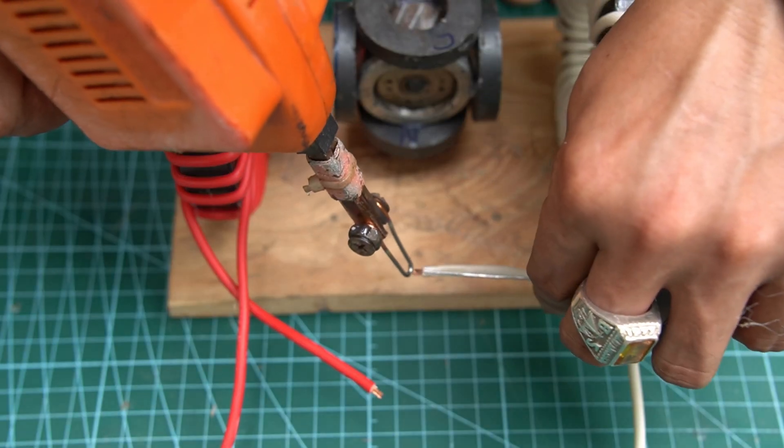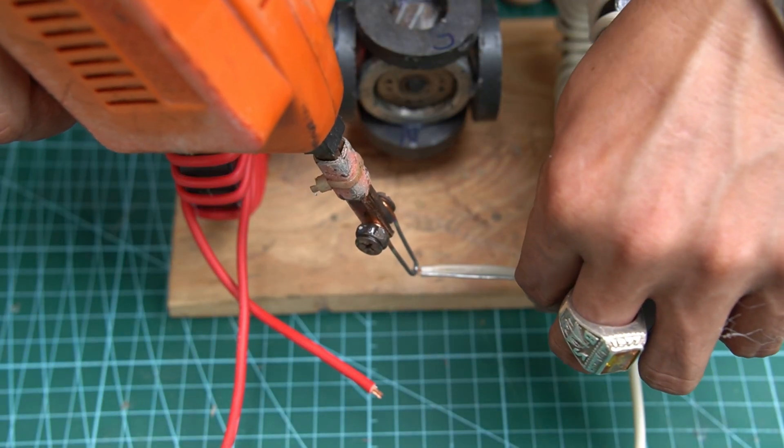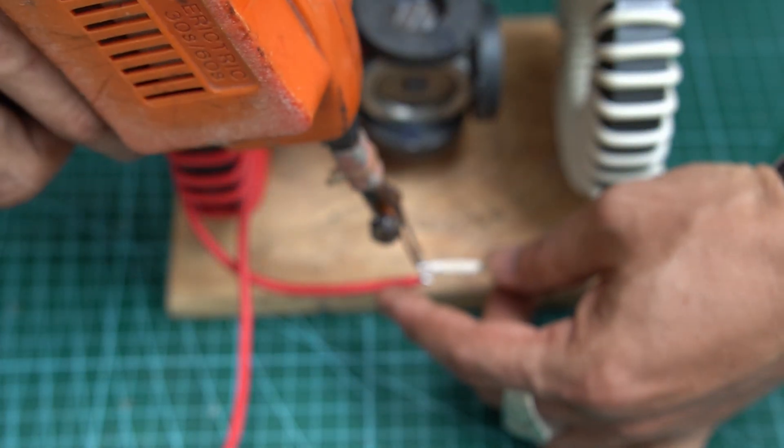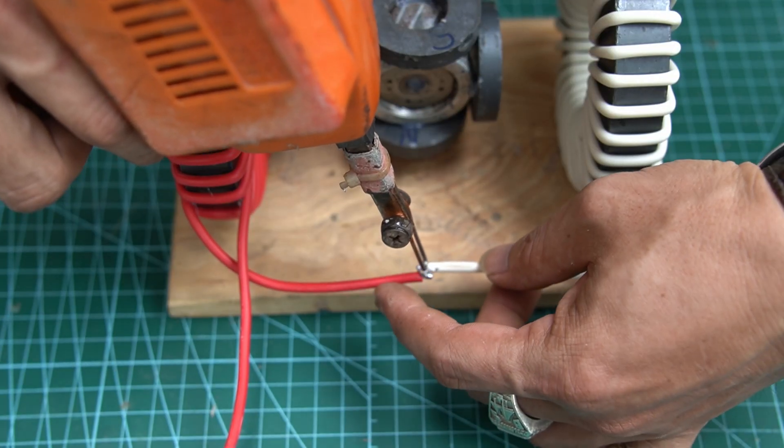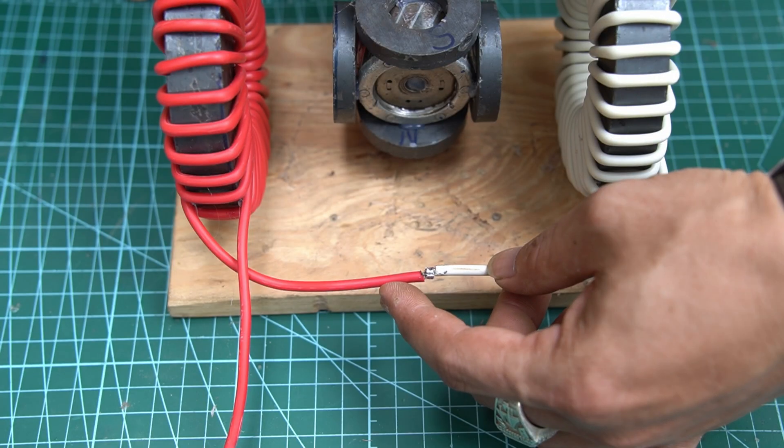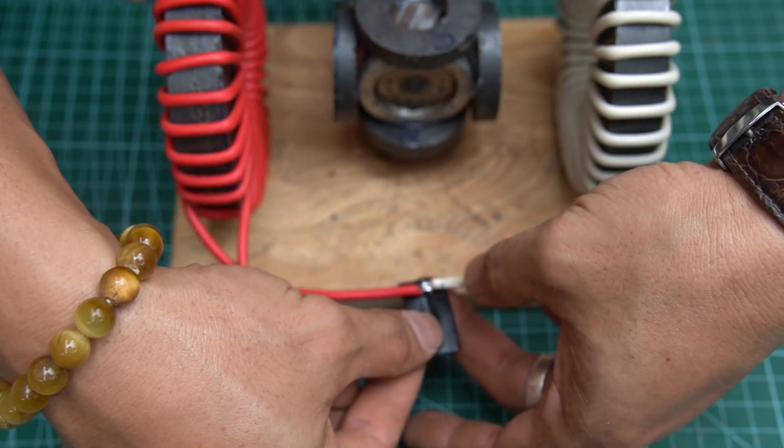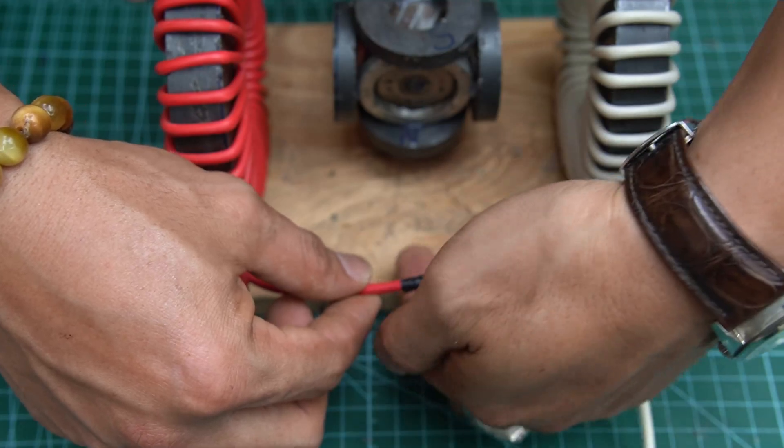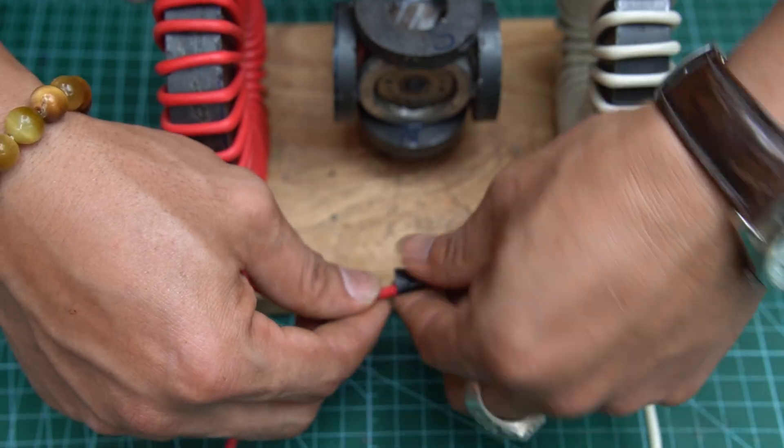I will smear some tin on the two ends of the two magnet coils, then use a soldering iron to solder the two ends of the wire together. Use electrical tape to wrap the wire joint tightly.